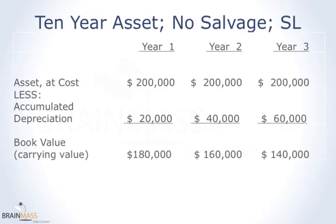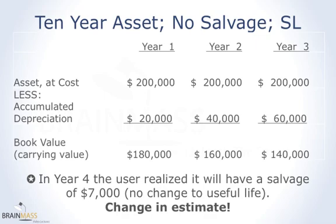Let's change a different estimate this time. Same asset: $200,000, original life 10 years, originally thought to have no salvage, straight-line method. But in year four, the user realizes it's going to have a salvage value of $7,000 as opposed to no salvage at all. We'll keep the original useful life, so we're only changing the salvage and not the useful life. We have a change in estimate — what will the depreciation expense be now in year four?